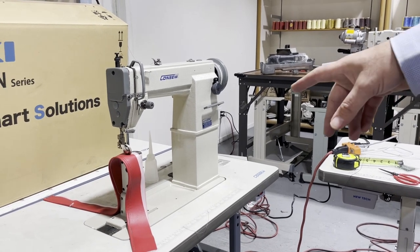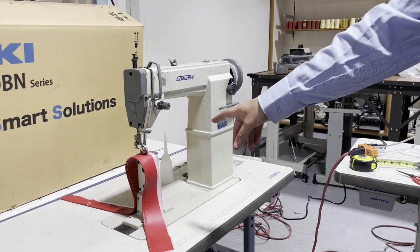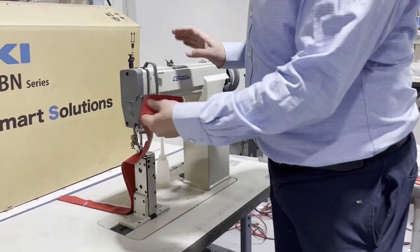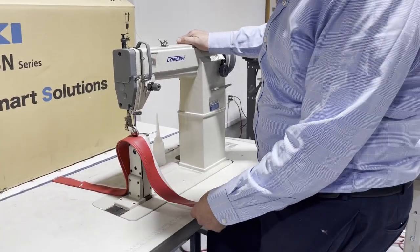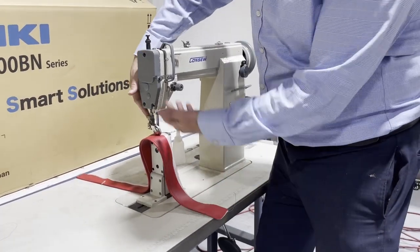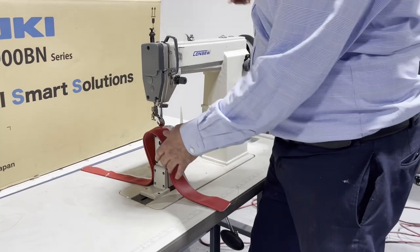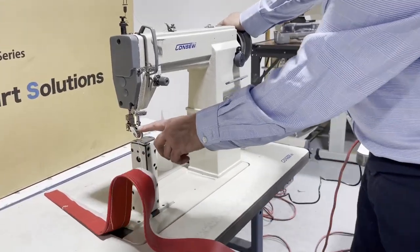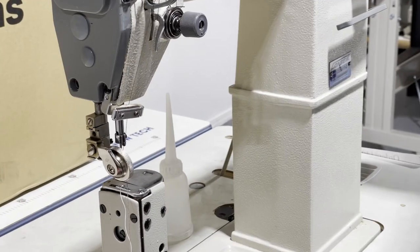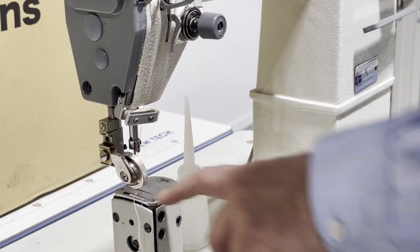So to the left hand side here, this is a post bed, we call this a post bed, the 228R. It's on a roller and it has a knee lifter that will raise the foot. Now, if you take a look, if you come closer to me, the top is a roller foot. The bottom is a feed dog.